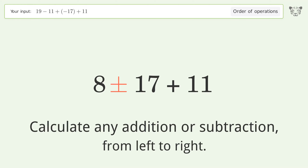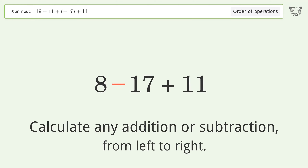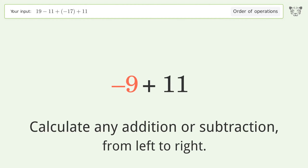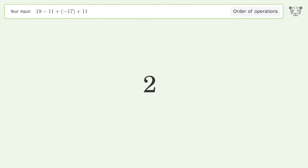Minus plus minus. 8 minus 17 equals negative 9. Negative 9 plus 11 equals 2. And so the final result is 2.